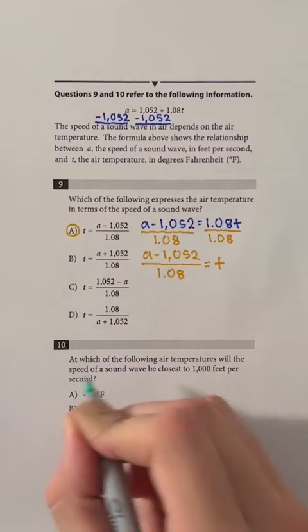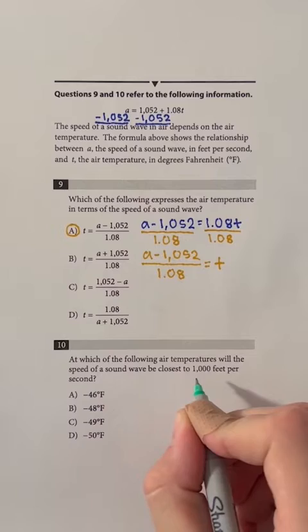Question number 10. At which of the following air temperatures would the speed of a sound wave be closest to 1000 feet per second?